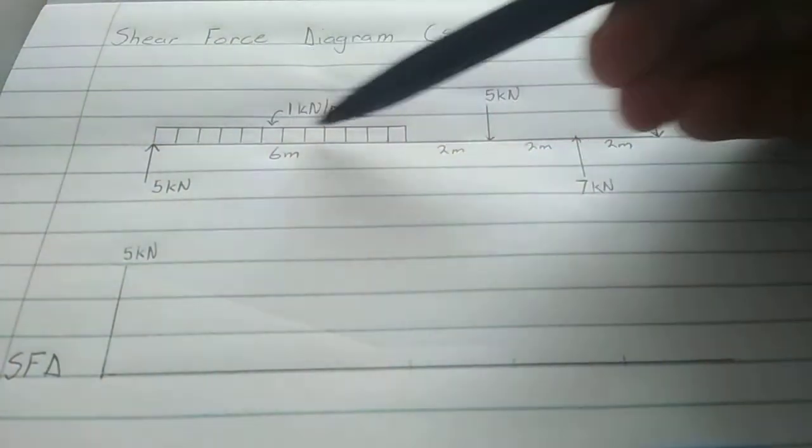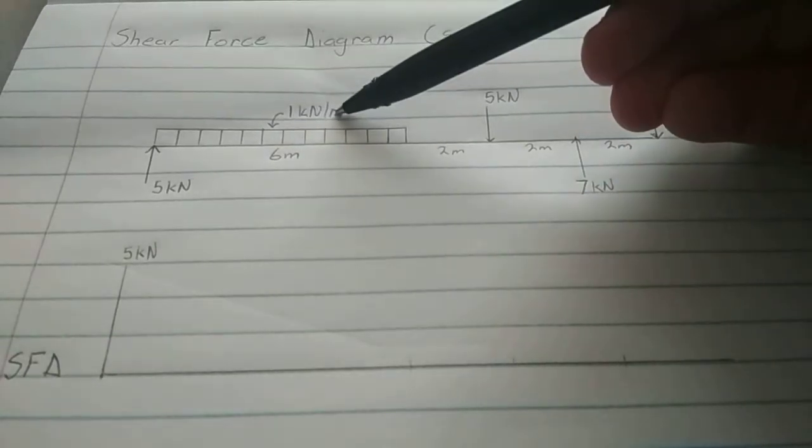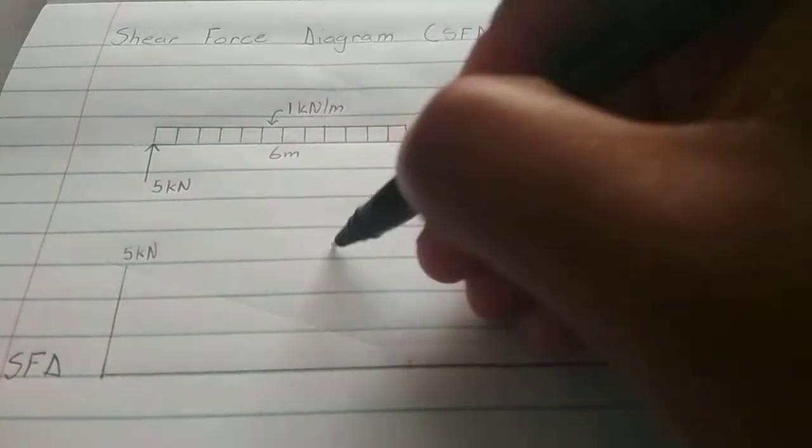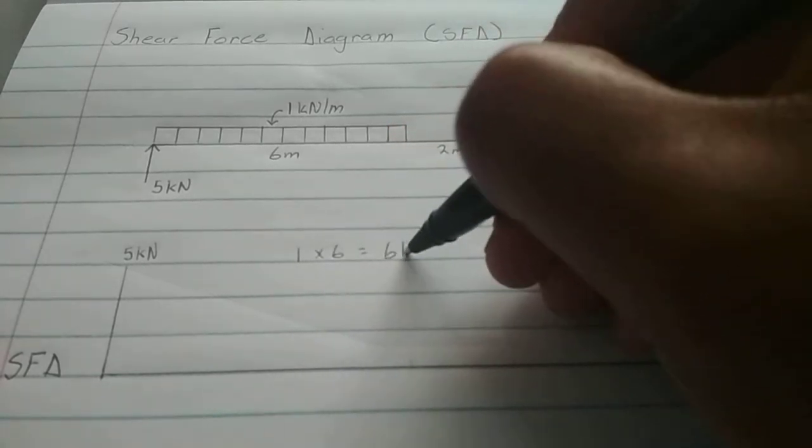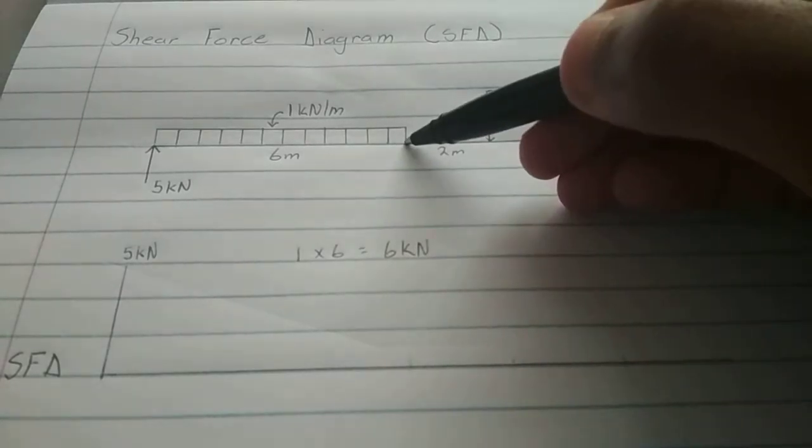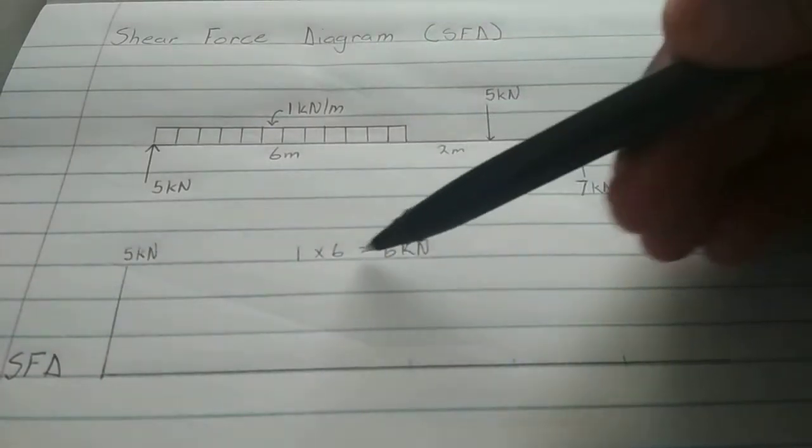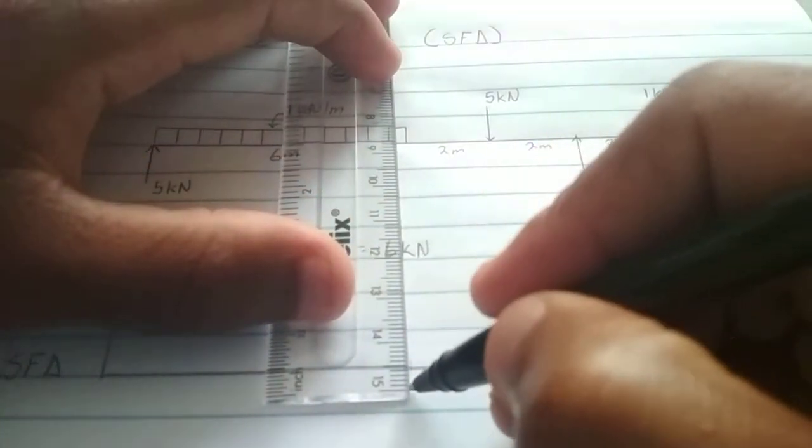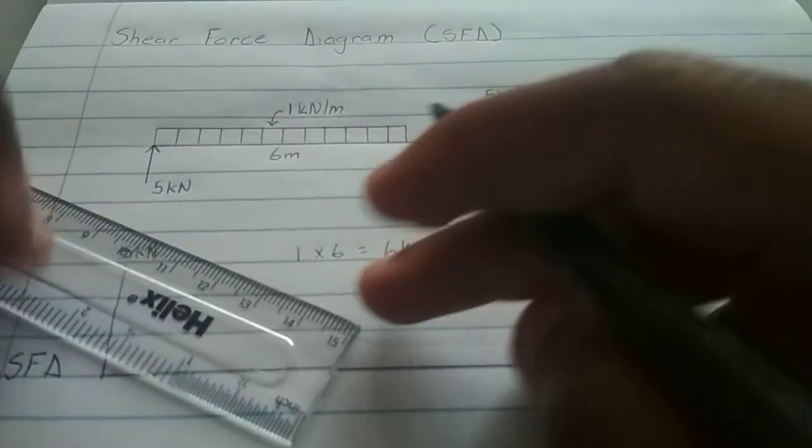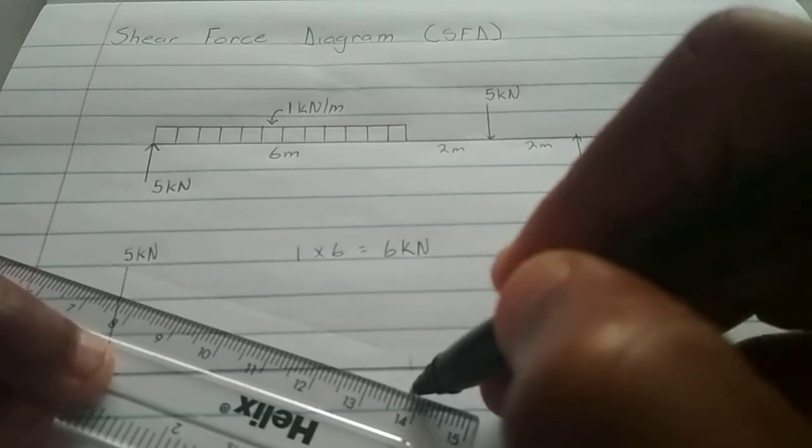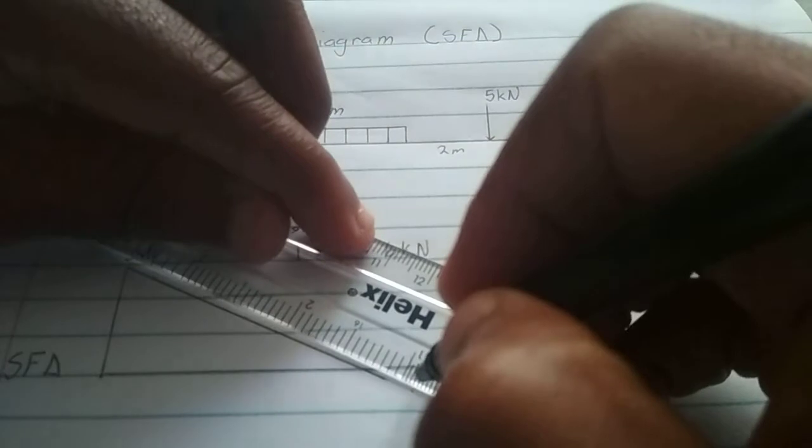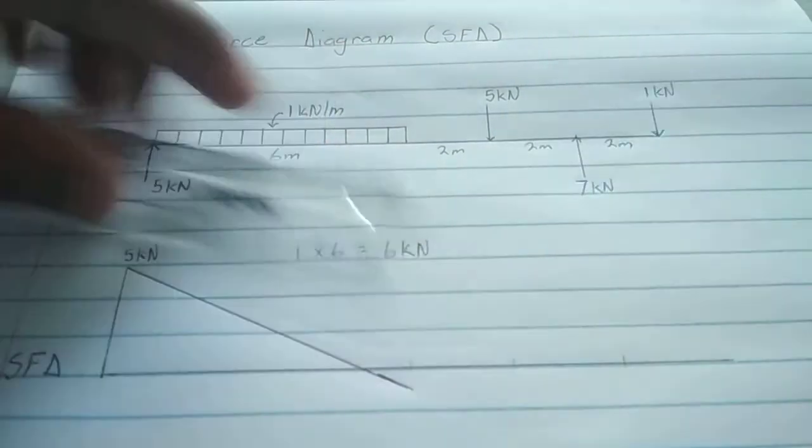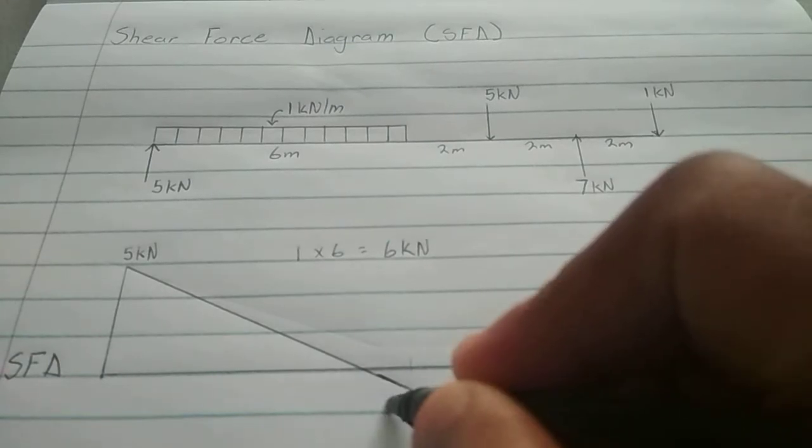The second force we encounter is this UDL. It's 1 kN per meter. Okay, and it totals a span of 6 kN. So it's 1 kN per meter times 6, which gives us 6 kN. Okay, so at this critical point, what we're going to do is that we've gone 5, we're going to subtract the 6, which gives us a minus 1. So at this critical point, we are at minus 1. And because it's a UDL, it's a diagonal movement.